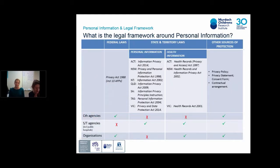The notion of personal information is crucial because Australia has a specific legal framework around the handling of personal information. There are three layers of protection. At the Commonwealth level, there is a Privacy Act and the Australian Privacy Principles (APPs), which apply to Commonwealth government entities and most private sector organizations. There are a few exemptions, such as the small business exemption — businesses with an annual turnover of less than three million — however, if that business provides a health service and holds health information, the Act will apply.